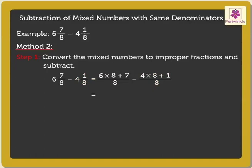This equals 55 upon 8 minus 33 upon 8. That is, 55 minus 33 upon 8, which is 22 upon 8, which equals 11 upon 4.